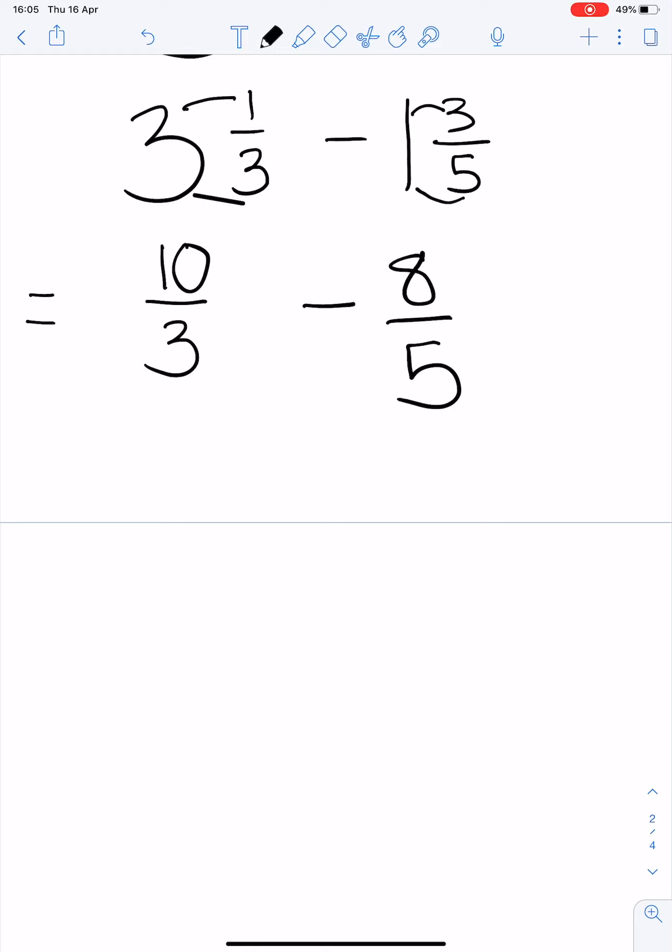So we have two improper fractions now but they still have different denominators. So we are going to change them both into 15. If I times this one by 5 I must times the top by 5. If I times this one by 3 I must times the top by 3.